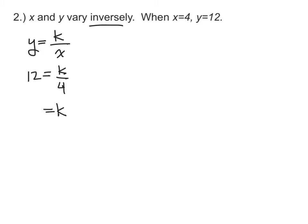Solving this, k is equal to 48, just by multiplying by 4 on both sides. Now this isn't any sort of function, that just tells us what the constant is. The function is going to be y equals 48 over x.